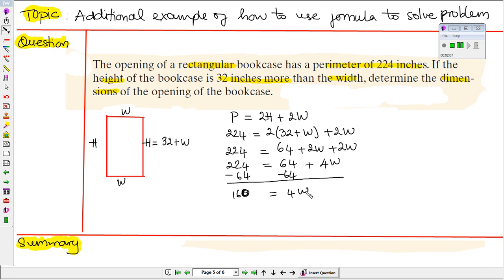On the right-hand side, we end up with 4w. Now we need to divide both sides by 4, so 160 divided by 4 that will be our w. In this case, the w will be 40.